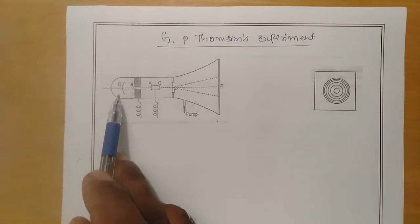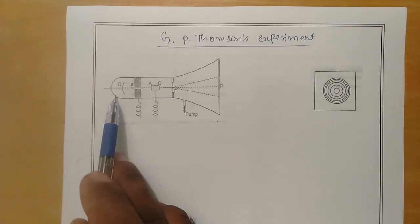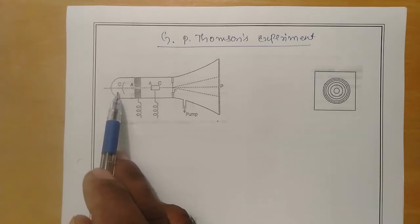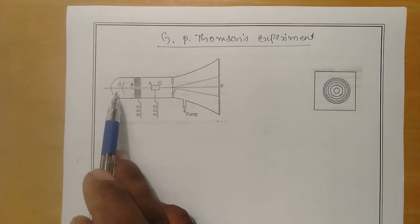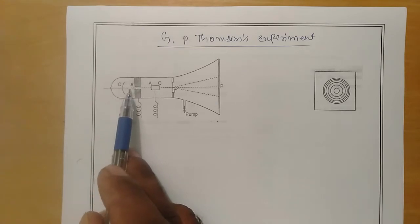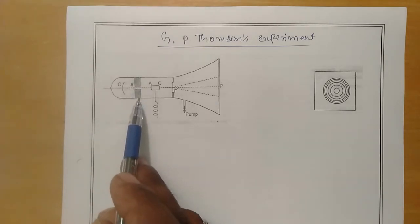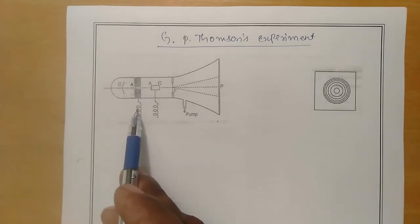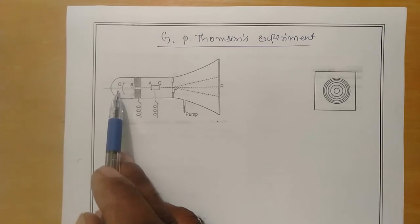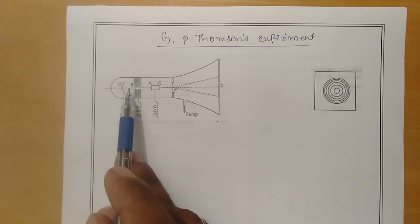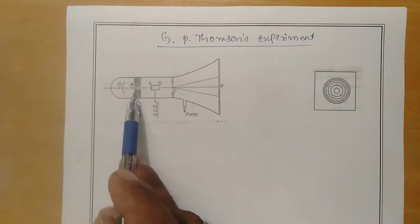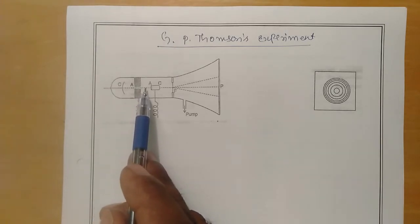The setup requires a source of electrons, also known as the cathode, which is a filament. When heated electrically, it emits electrons. The electrons emitted by the cathode are attracted towards the anode. A small potential difference is applied, and a fine hole is made in the anode so that a collimated beam of electrons can come out.